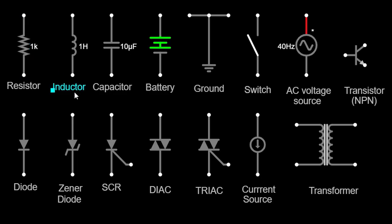Next, we have the inductor. Its symbol resembles a coil or a spring. Inductors store energy in the form of a magnetic field when current flows through them. They resist changes in current, making them useful in applications such as filters, transformers, and energy storage devices.